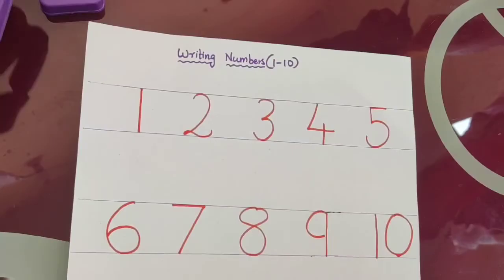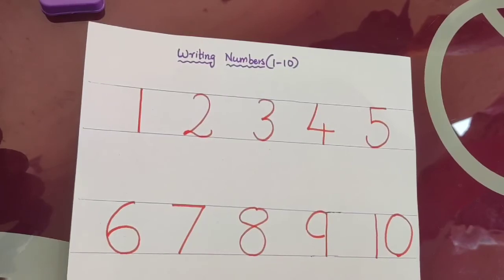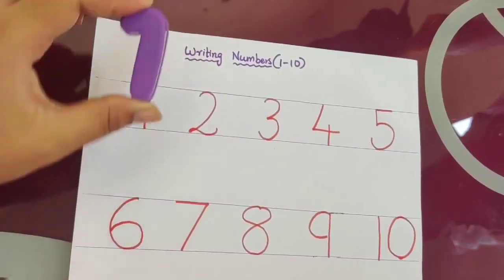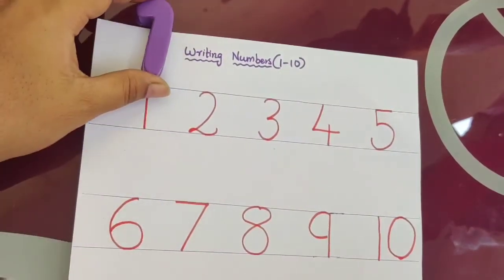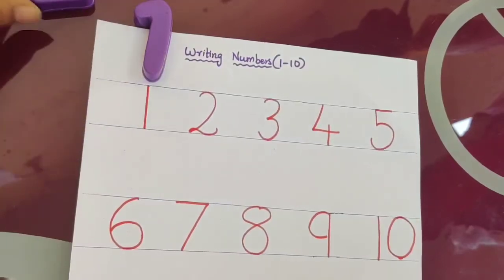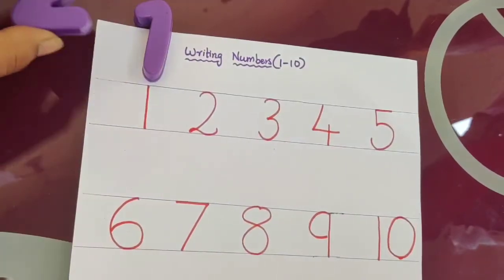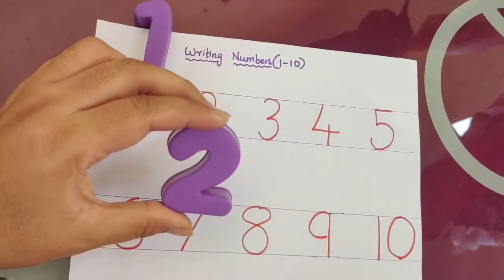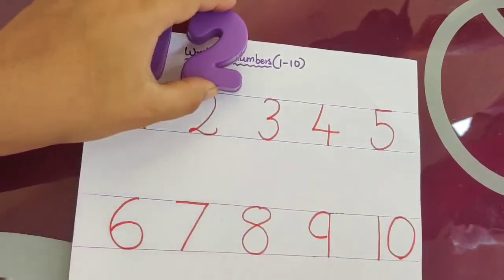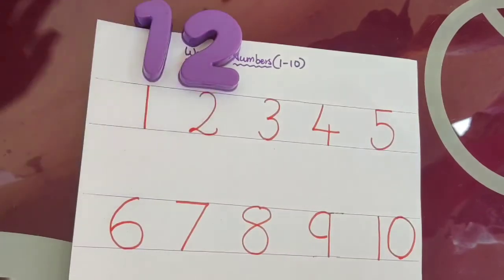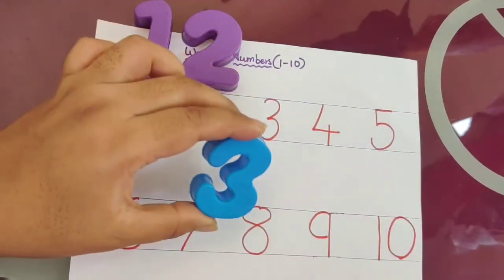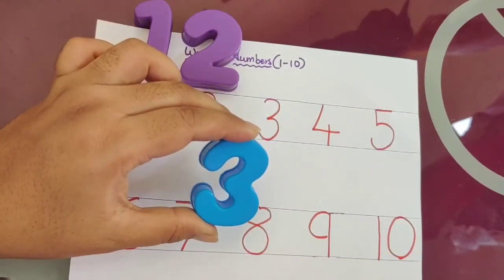Now, let's revise children. What number is this? It's number 1. What number is this? It's number 2. What number is this? It's number 3.